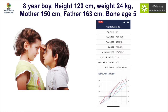We are also providing specific parameters like target height standard deviation score, which takes into account the mid-parental height; the corrected height standard deviation score, which corrects the current height with regard to the parents; and height standard deviation for bone age, which corrects for bone age. All of these parameters are put into a particular algorithm which describes the condition and provides an interpretation — in this case, normal growth.